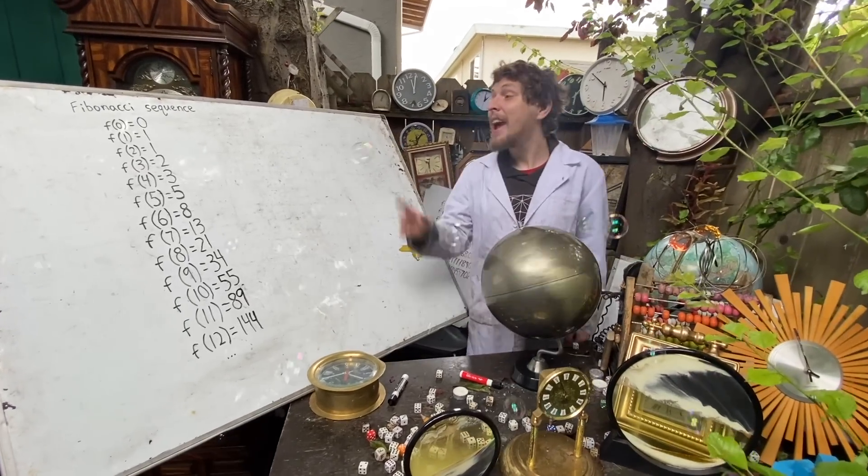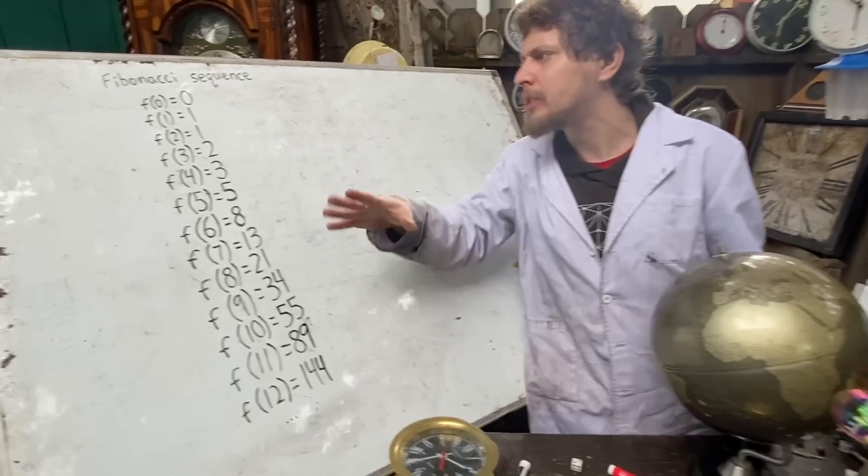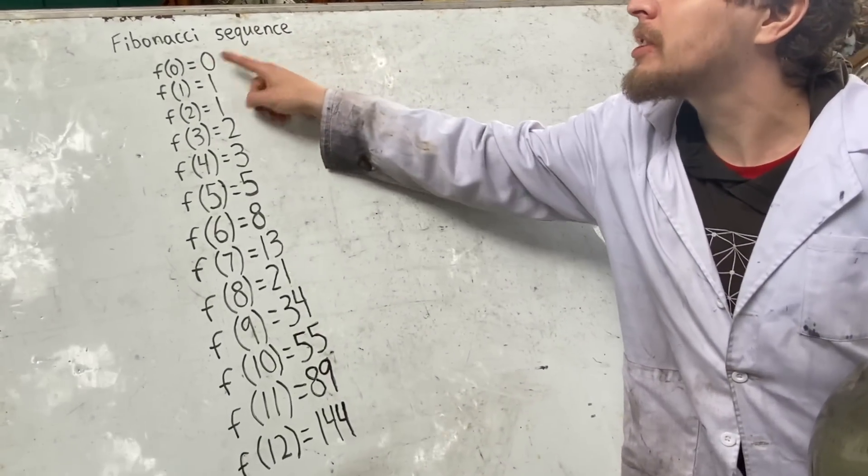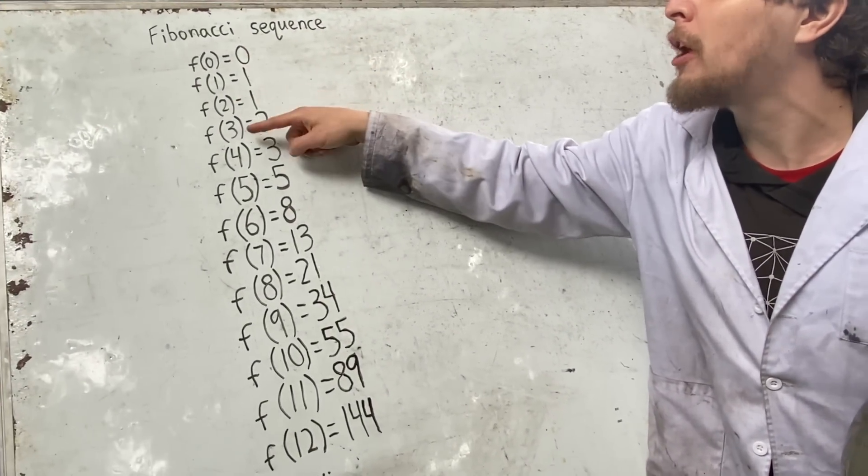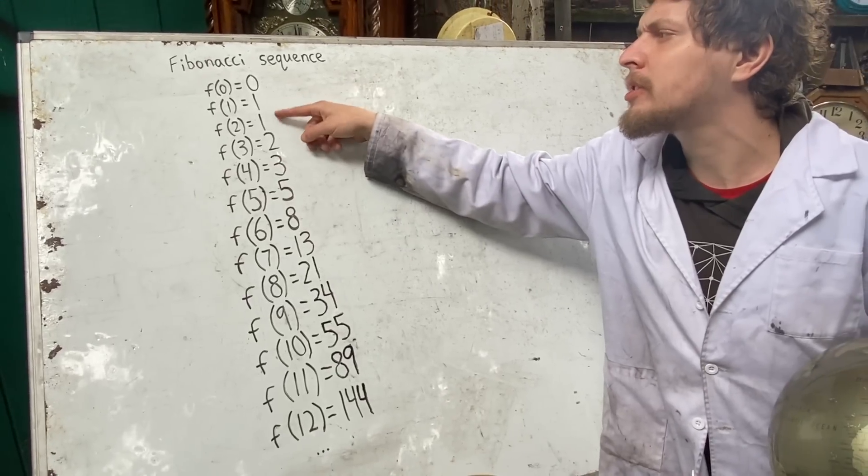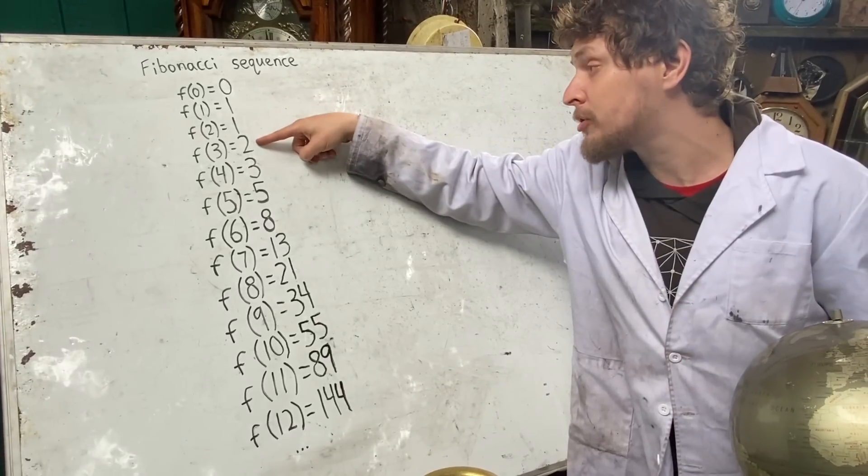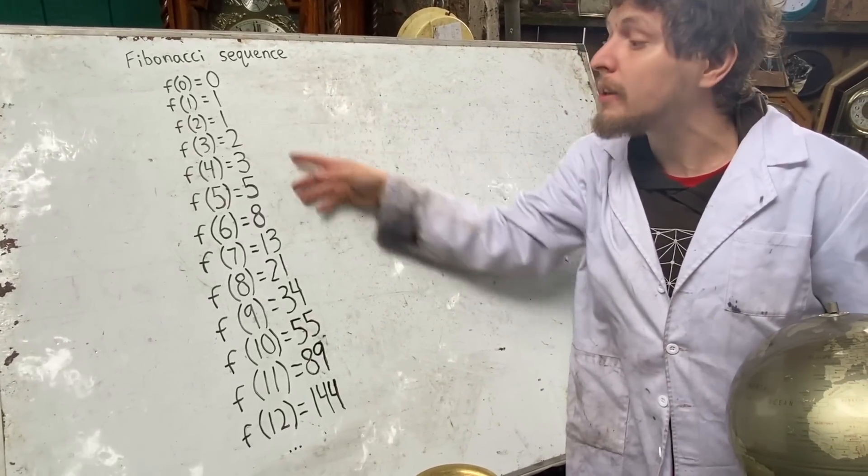Hey folks, I'm Dumotro, and this is the classic Fibonacci sequence, which starts with a zero, then a one, then each following Fibonacci number is the sum of the previous two, like one plus one is two, one plus two is three, and so on.